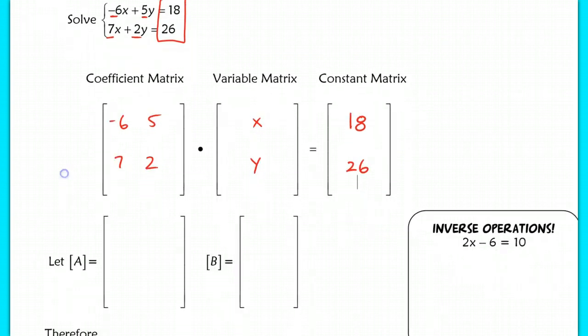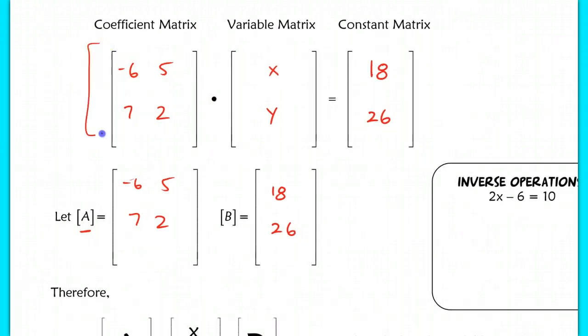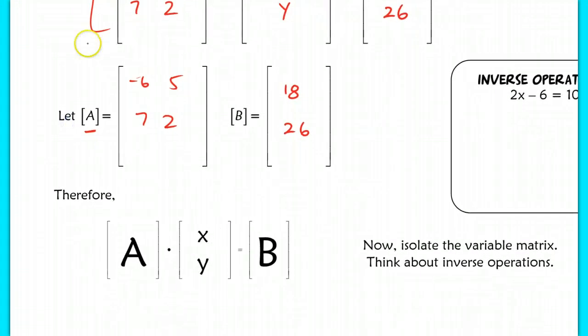Now I'm going to define A in my calculator to be our coefficient matrix. So you use your coefficient matrix, negative six, five, seven, and two, and we're going to say let A equal that. Now B is going to be 18 and 26. You do not need to define in your calculator your variable matrix. So now this system here that I have written in matrices looks like this. If I let A equal this and B equal this.